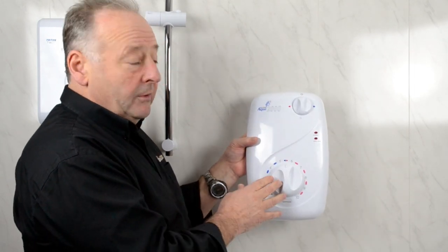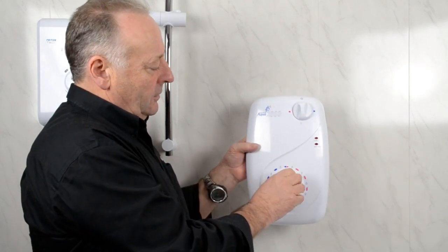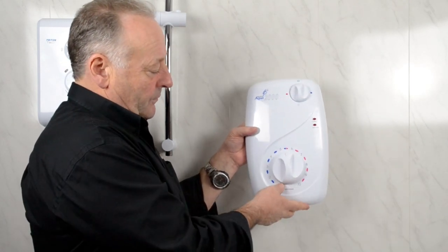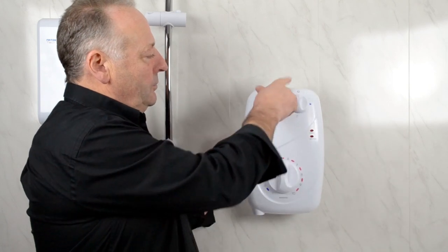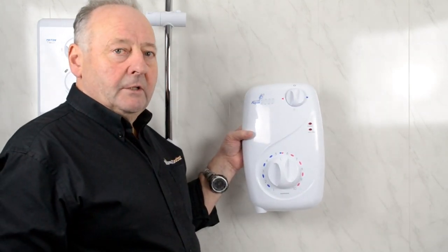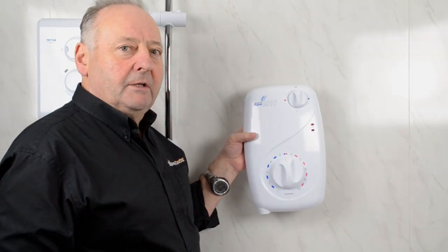Before you fit the cover back onto the shower, make sure the knobs are still set at 12 o'clock. Set them at 12 o'clock, pop the cover back in, put the screws back in, turn the power on, and you're ready to have another shower.